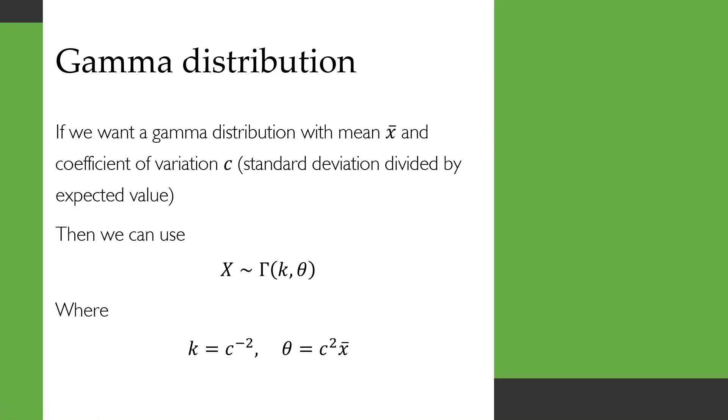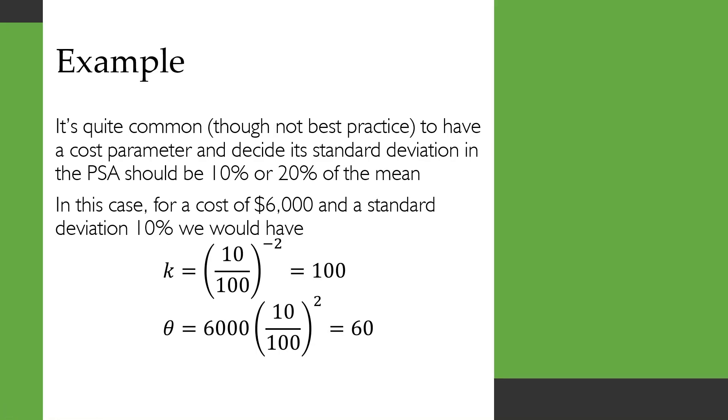So this is very simple and it's quite common, though not best practice, to have in a model something like a cost parameter and decide that its standard deviation in the PSA should be 10 percent or 20 percent of the mean.